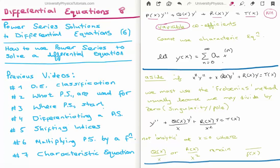The suggestion we make is that the function y(x) can be written as an infinite power series. Note that it's an infinite power series, so for physical reasons at some point we'll have to truncate it. But it's the infinite power series of the coefficients a sub n times x to the n.